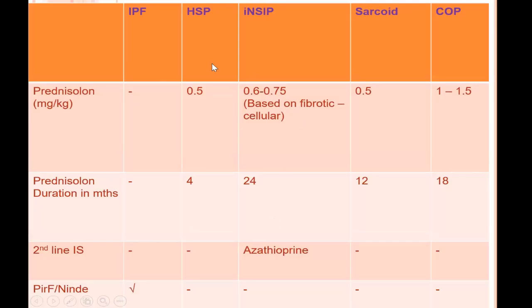Why is it so important to identify the UIP or IPF pattern? Looking at the treatment aspect, the drugs pirfenidone and other anti-fibrotic agents are exclusively used in the treatment of IPF. They stop the progression of fibrosis — they do not reverse the fibrosis, but they help improve quality of patient life. These are also very costly drugs with a significant side effect profile, so it is very important to identify the UIP or IPF pattern from a treatment perspective.